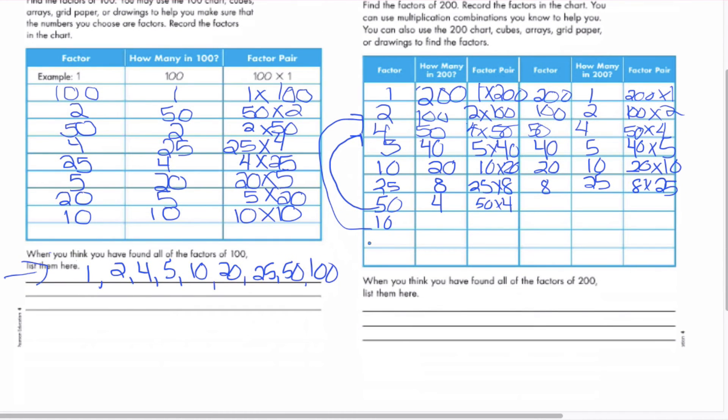What I'm going to do now is I'm going to list my factors for here. The smallest one being 1, 2, 4, 5, 8, 10, 20, 25, 50, 100, 200.